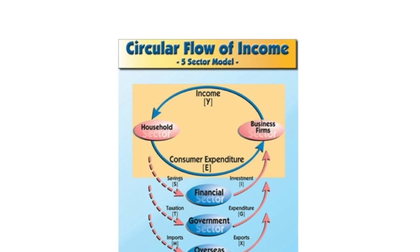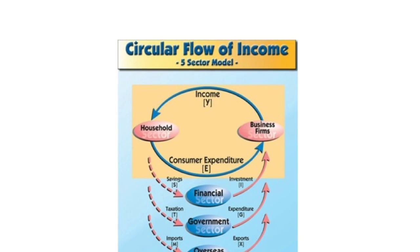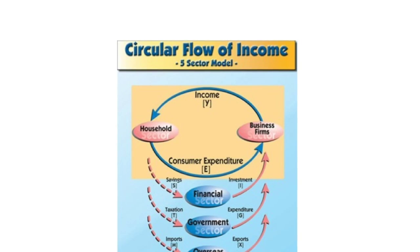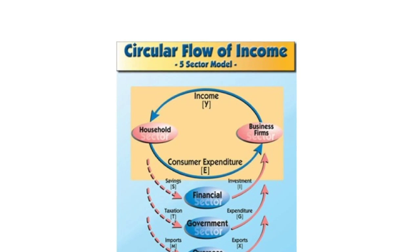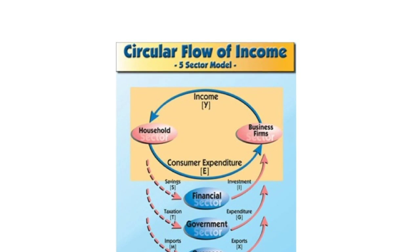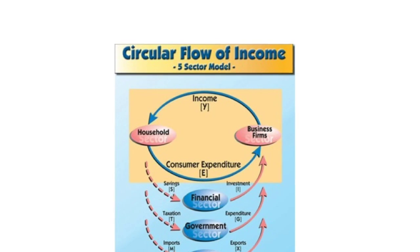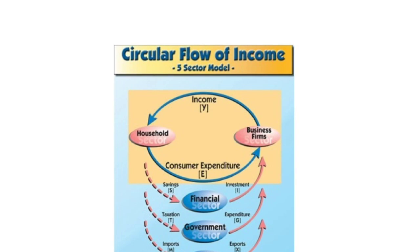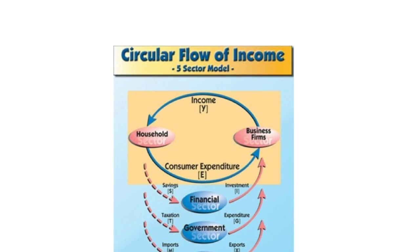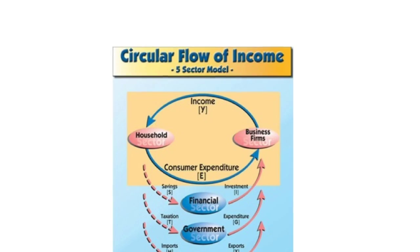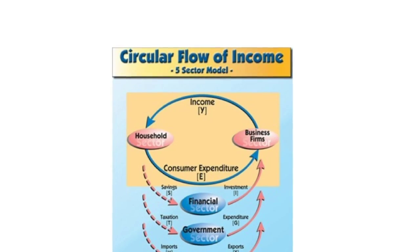The second leakage is taxation: if people have their incomes taxed, they won't have as much money, so the flow is reduced. Lastly, money leaves the economy through imports. For example, if I buy a gun from America for £10, that £10 goes to the American economy and leaves the British economy.